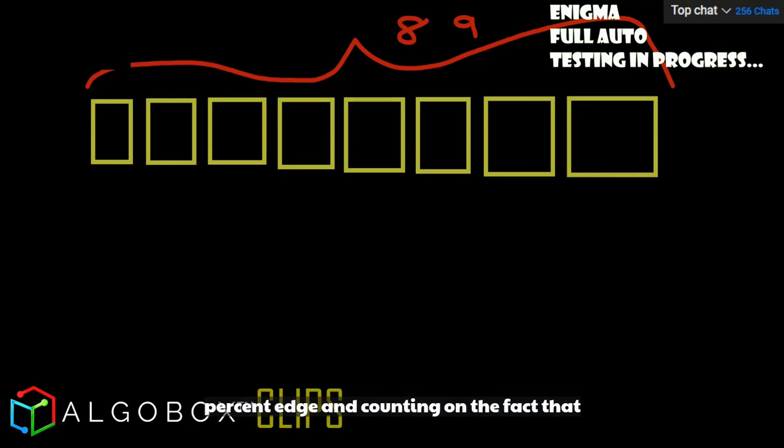So even if that gives them a 2% edge, they are living off of that 2% edge and counting on the fact that people are drunk and not trying to do mathematics while they're at Vegas. They're there to have a good time.